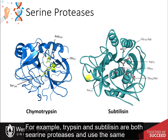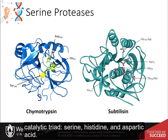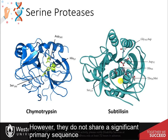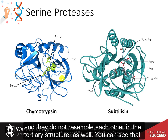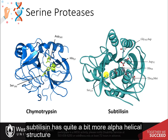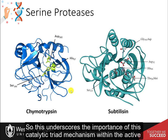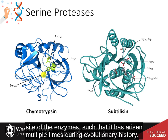For example, chymotrypsin and subtilicin are both serine proteases and use the same catalytic triad — serine, histidine, and aspartic acid. Here you see the serine, histidine, and aspartic acid of the catalytic triad in subtilicin. However, they do not share significant primary sequence, and they do not resemble each other in tertiary structure as well. You can see that subtilicin has quite a bit more alpha-helical structure than chymotrypsin does; chymotrypsin is characterized by more beta sheets. So this underscores the importance of this catalytic triad mechanism within the active site of enzymes, such that it has arisen multiple times during evolutionary history.